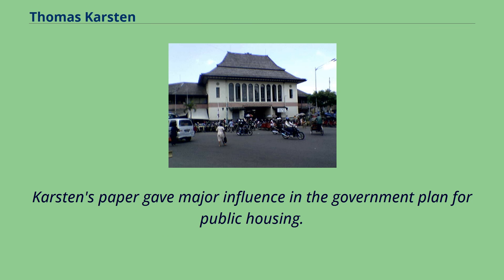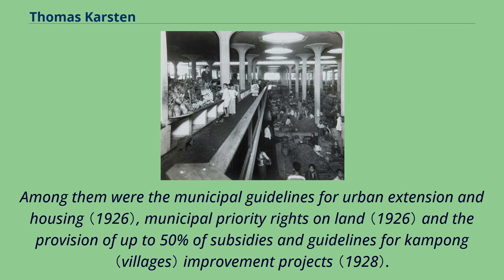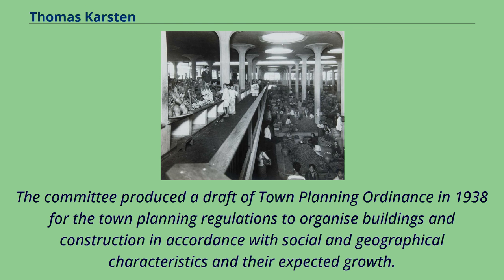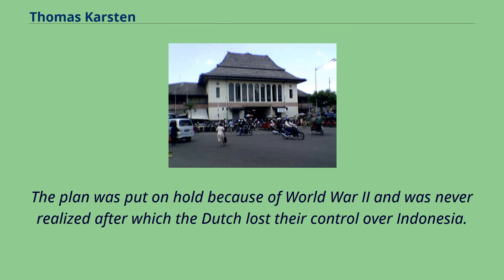Carsten's paper gave major influence to the government plan for public housing, among them the Municipal Guidelines for Urban Extension and Housing, Municipal Priority Rights on Land, and the provision of up to 50% subsidies and guidelines for compound improvement projects. In 1930, Thomas Carsten, together with other prominent architects, politicians, and bureaucrats in the colony, was appointed by the government to the Town Planning Committee. The committee produced a draft Town Planning Ordinance in 1938 to organize buildings and construction in accordance with social and geographical characteristics and their expected growth. The plan was put on hold because of World War II and was never realized, after which the Dutch lost their control over Indonesia.